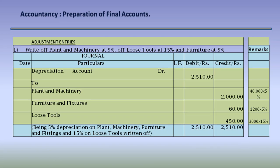Adjustment entry 1: write off plant and machinery at 5%, loose tools at 15%, and furniture at 5%. We need to pass the entry: Depreciation Account Dr. 2,510 — to Plant and Machinery 2,000 (5% of Rs. 40,000), to Furniture and Fixtures Rs. 60 (5% of Rs. 1,200), to Loose Tools Rs. 450 (15% of Rs. 3,000). Total depreciation comes to Rs. 2,510. Depreciation account is debited with 2,510 and the respective asset accounts are credited.